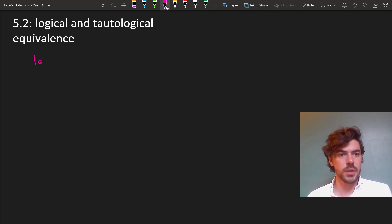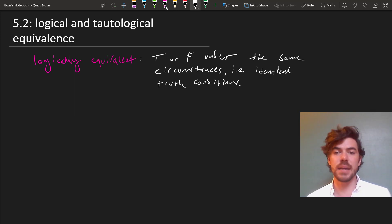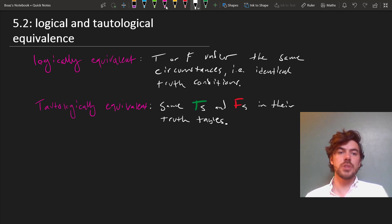Now two sentences are logically equivalent if they are true or false under the same circumstances. That is to say, they have the same truth condition. And two sentences are tautologically equivalent if they have the same pattern of Ts and Fs in their respective truth tables. Let's look at an example of a tautological equivalence before looking at some logical equivalences that are not tautologically equivalent.